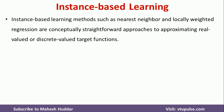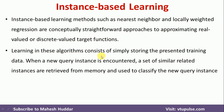Instance-based learning methods such as nearest neighbor and locally weighted regression are conceptually straightforward approaches to approximate both real-valued and discrete-valued functions. For example, whether the target is discrete-valued or real-valued, we can use instance-based learning techniques. The learning in these algorithms consists of simply storing the presented training data — we don't do anything at training time, we just store those training instances into memory.